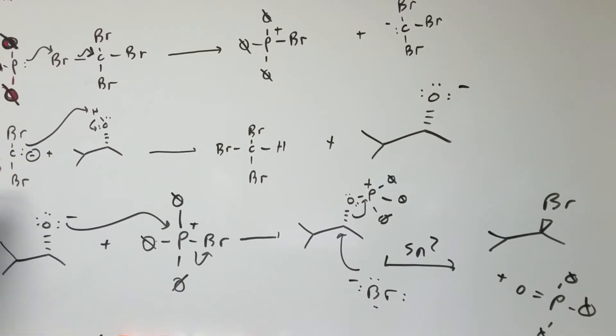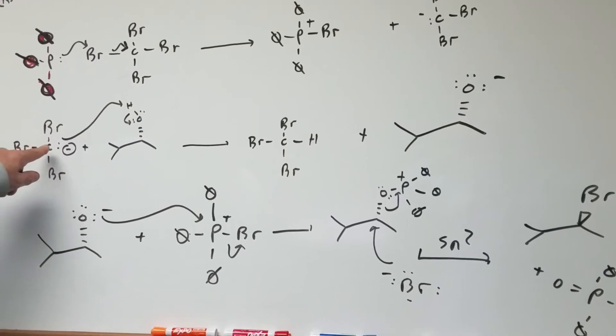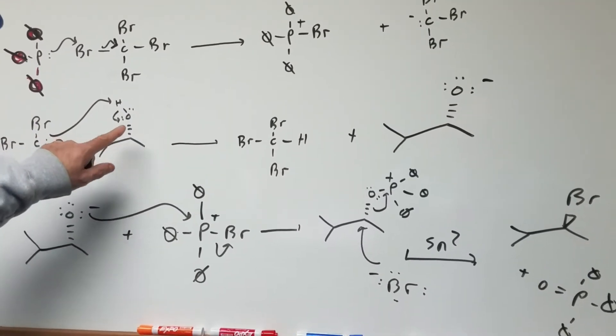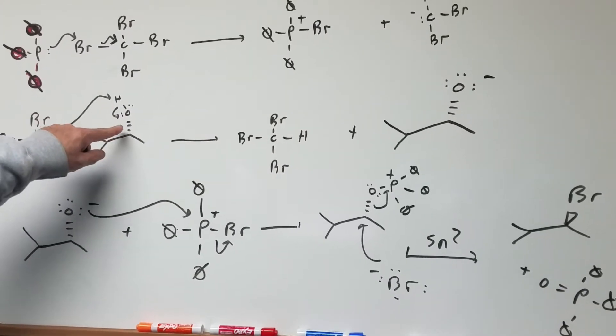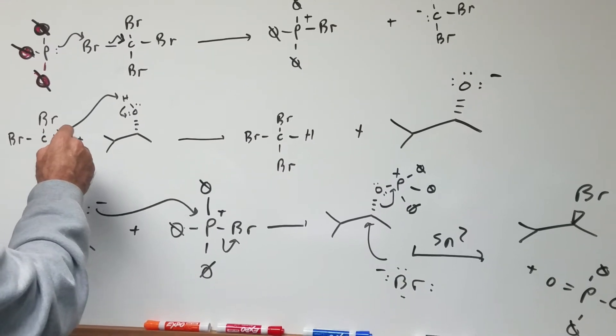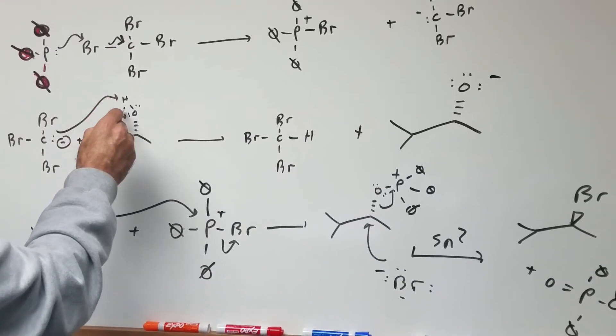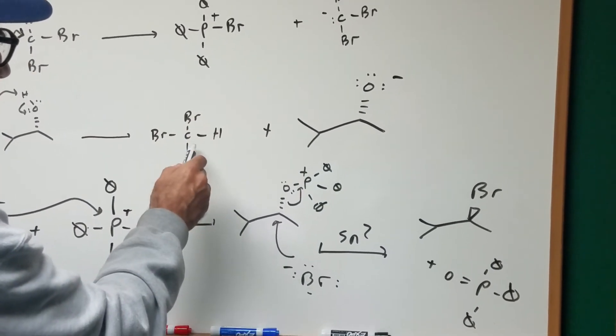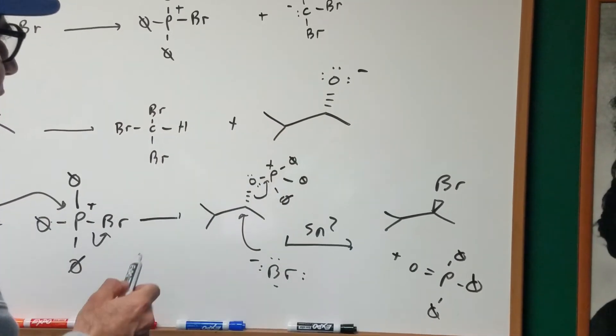Once we have the carbanion set up, all I'm going to do is deprotonate the alcohol. Notice, I'm not changing any stereochemistry here. I'm not breaking anything in the chiral carbon. I'm just taking this H off. As you can see, look at the arrow movement, and that's going to give me this, which is bromoform, and the deprotonated alcohol.